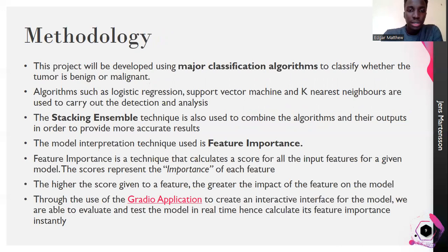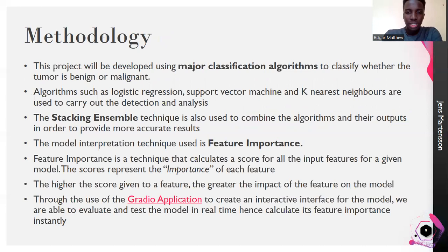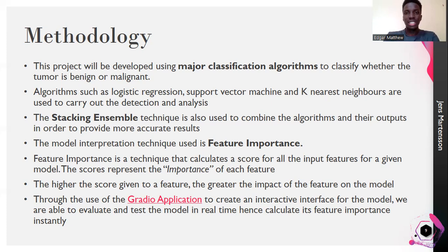For methodology, we are going to use logistic regression, support vector machine, and K-nearest neighbors to carry out the detection and analysis. Afterwards, we shall combine all results and develop an independent model using stacking ensemble, which we will also train and test. We will use feature importance to interpret the model — it calculates a score for all input features, representing how important and how much each feature will affect the model's results. We shall also use an application called Gradio to see in real time how much a certain feature can affect the results of the model, allowing us to observe changes in output accuracy as we make adjustments.